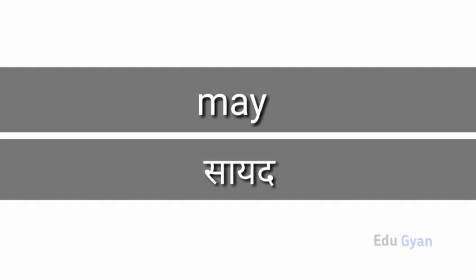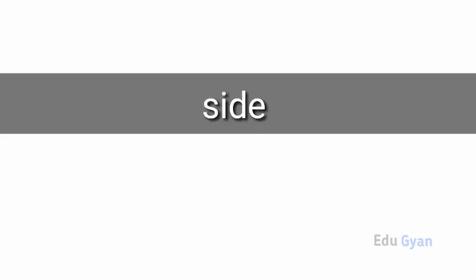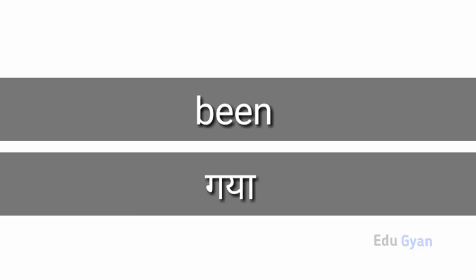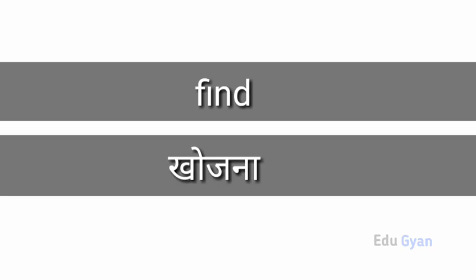Me means saiyad. Down means neiche. Side means pakch. Been means gaya. Now means ab. Find means khujna.